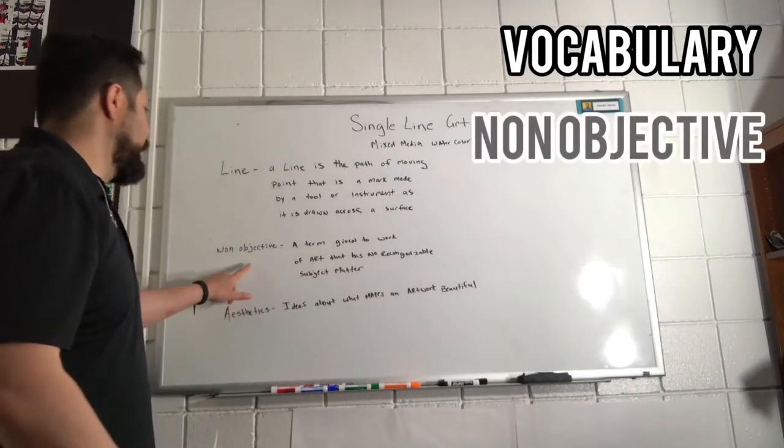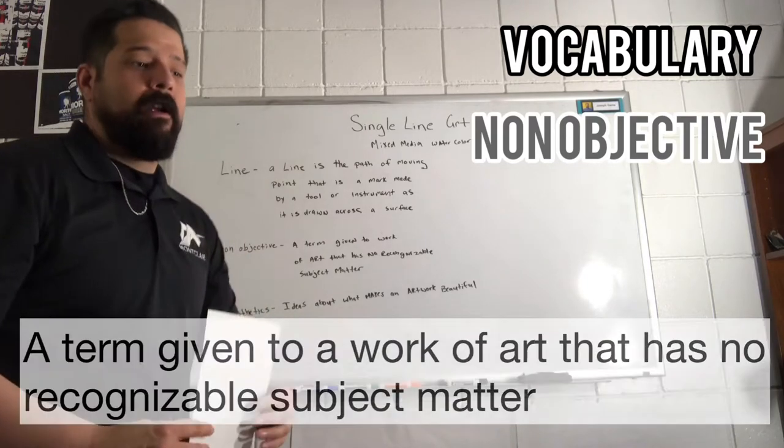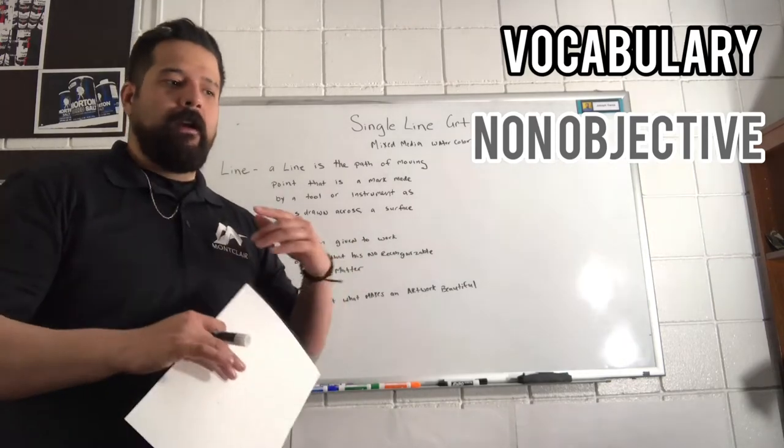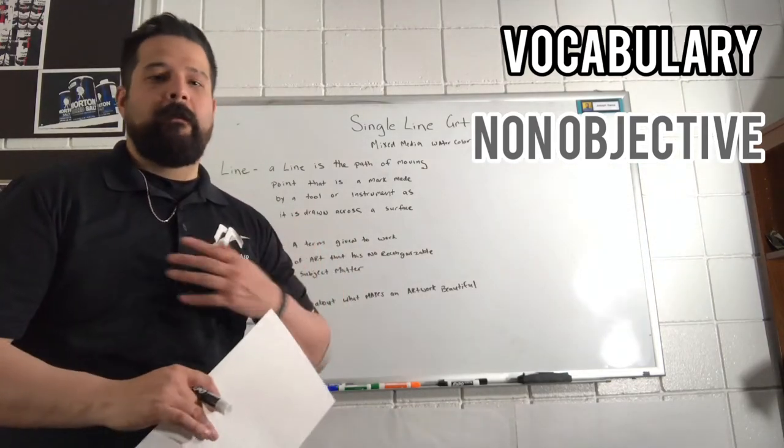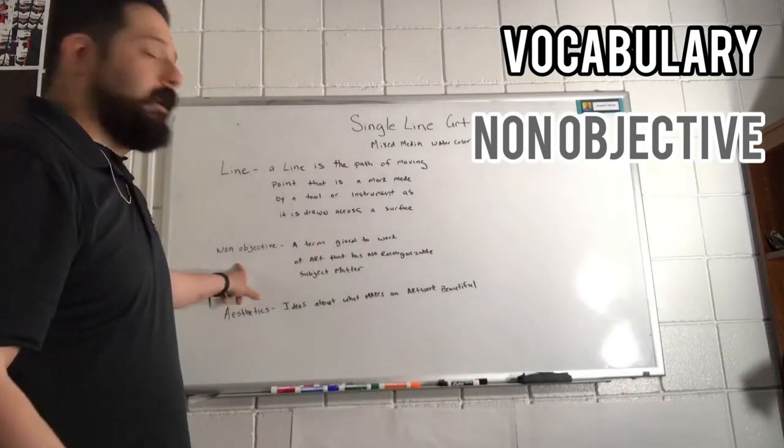The next one you're going to have is non-objective. It's a term given to an artwork that is non-recognizable by a certain matter. So it's basically the things that you've learned from other videos like imperialism or impressionism, surrealism and stuff like that. Those are objective paintings. The ones that we're learning today are non-objective.